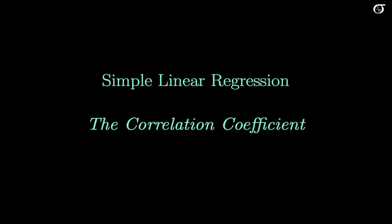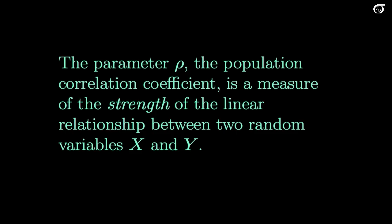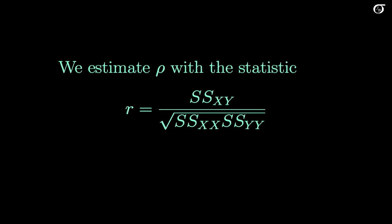Let's talk about the correlation coefficient. The parameter rho (the Greek letter R-H-O) is the population correlation coefficient, and it is a measure of the strength of the linear relationship between two random variables X and Y. We're not going to know rho because it's a parameter, and we are going to estimate it with R, the Pearson correlation coefficient.